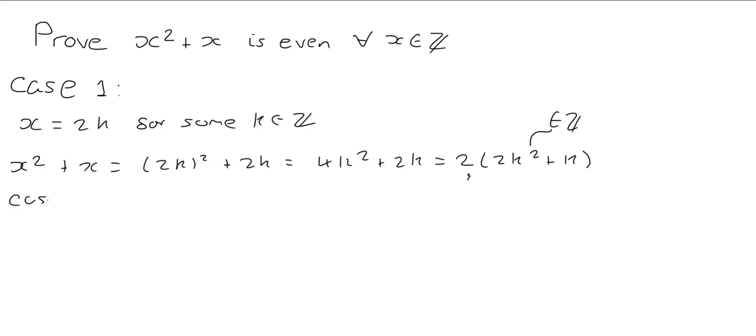So case 2, we're going to look at when x is odd. So that would mean that x is equal to 2k plus 1 for some k in Z.